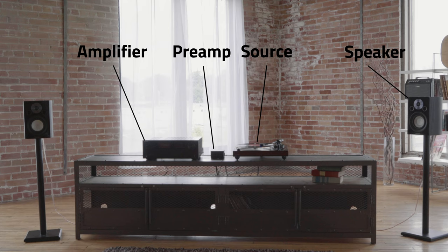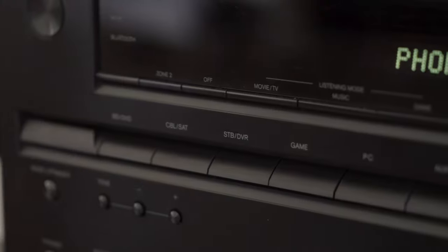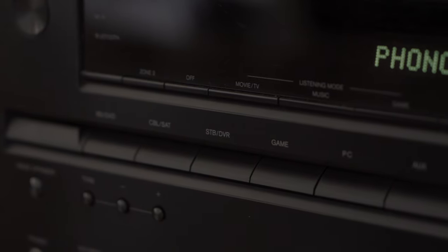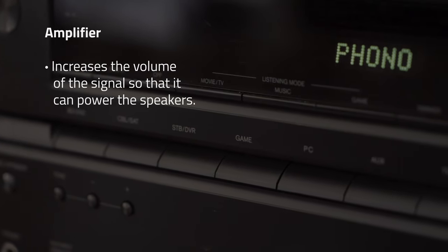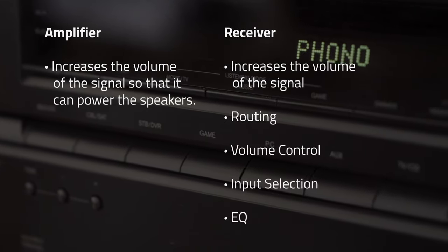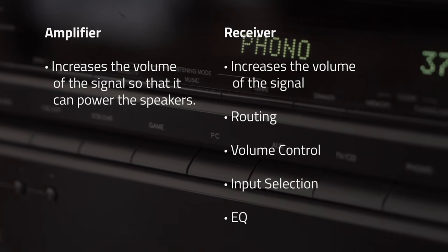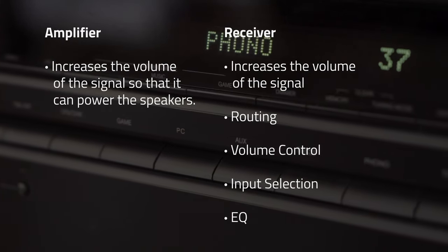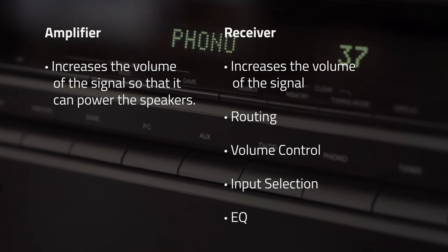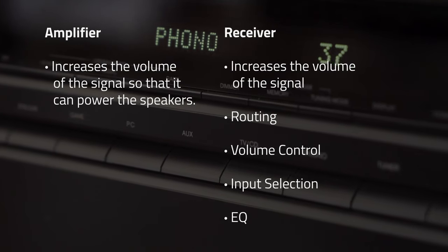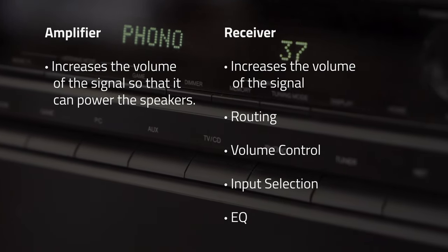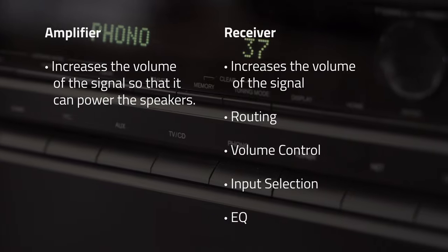Now while we're talking components, you may be wondering what the difference is between an amplifier and a receiver. An amplifier typically has one job, which is to take the signal and boost the volume to push it through the speakers. A receiver does this and also takes care of things like routing, volume control, input selection, and EQ. It may also have sources like Bluetooth or a radio tuner built right in.